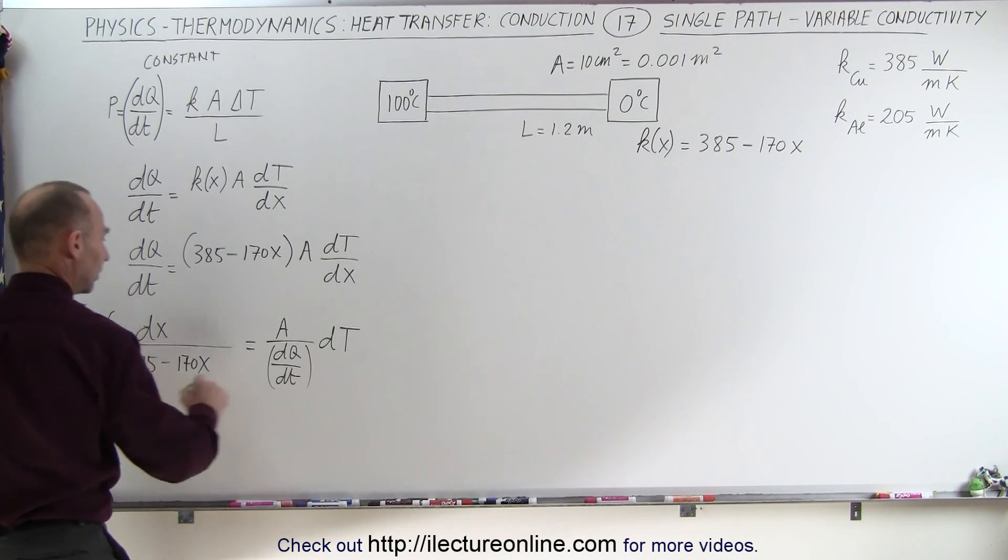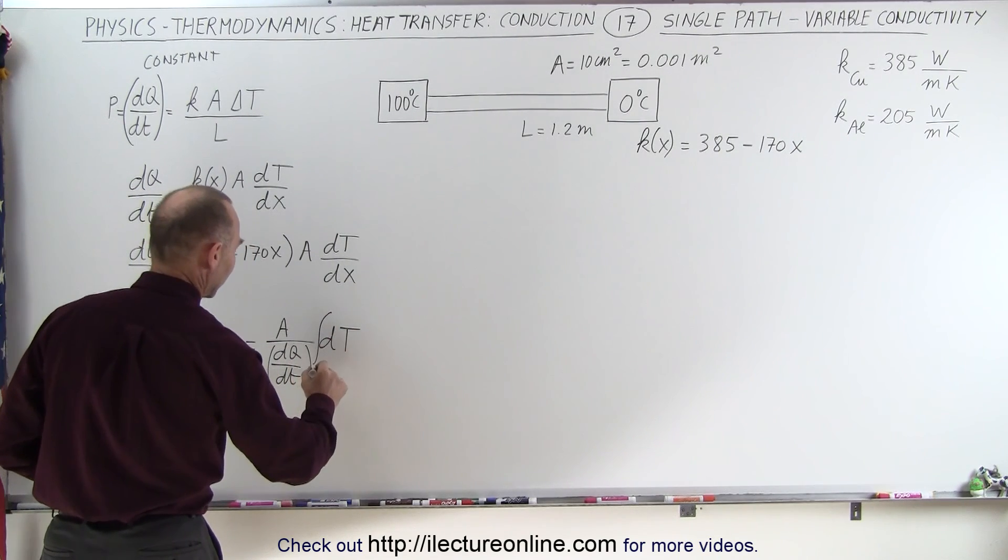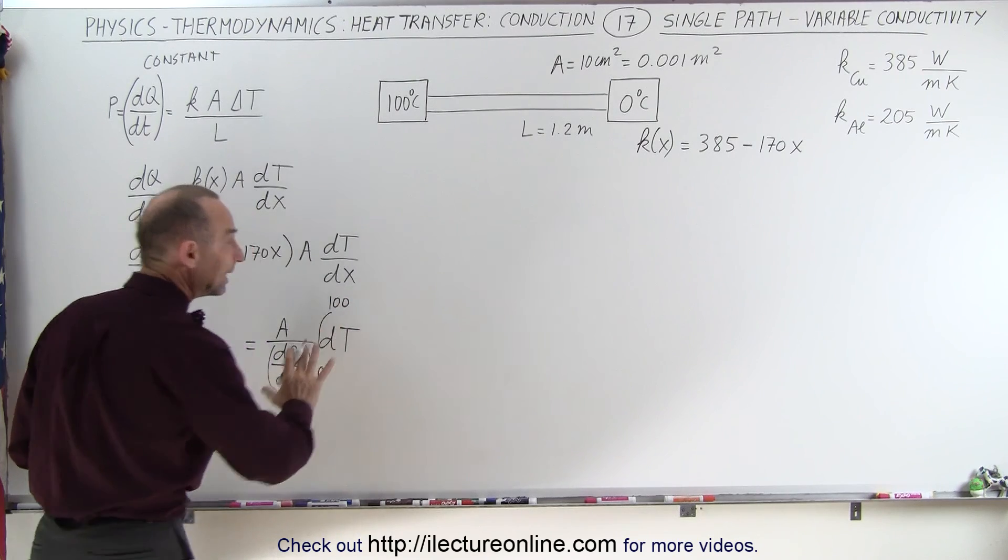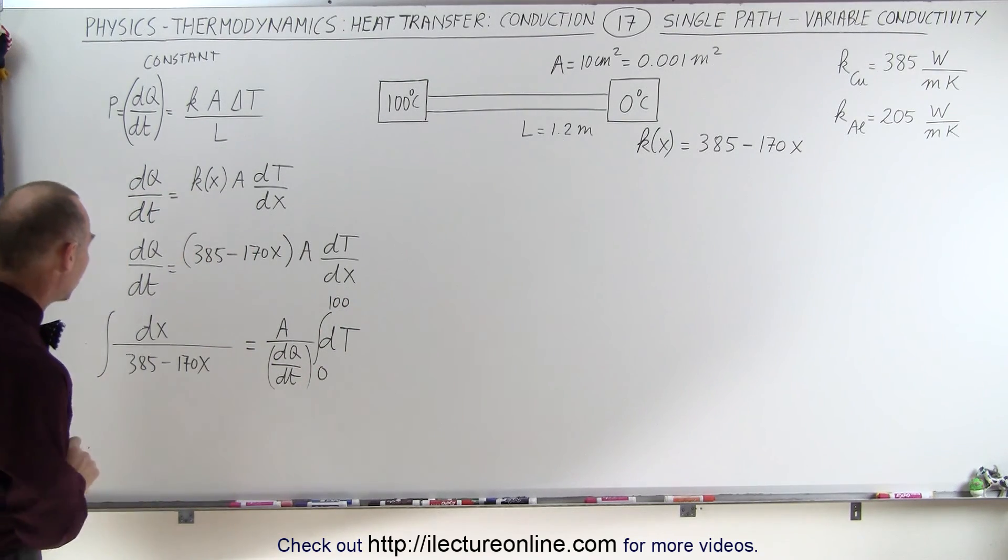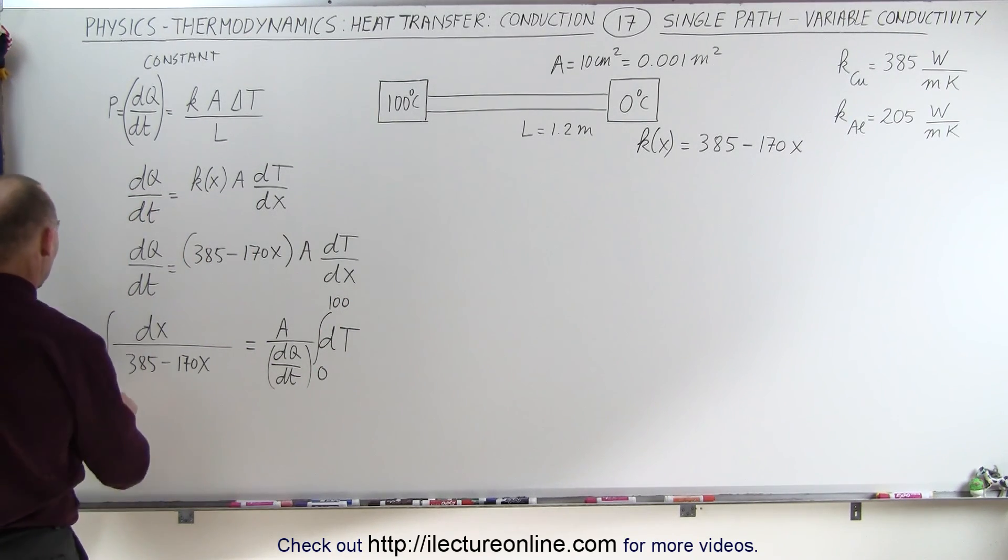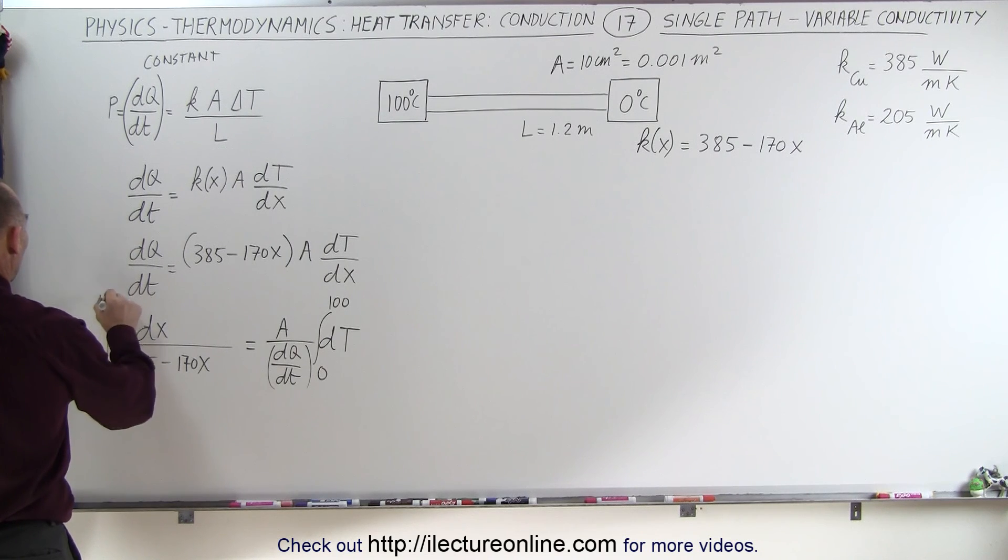So we're integrating the left side, we're integrating the right side. Temperature changes from 0 to 100. We're just finding the absolute value of the temperature change. And on this side, we travel from 0 to 1.2.